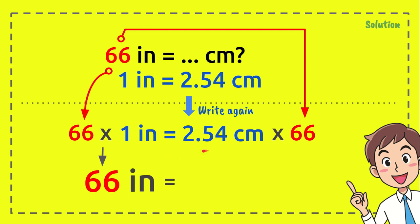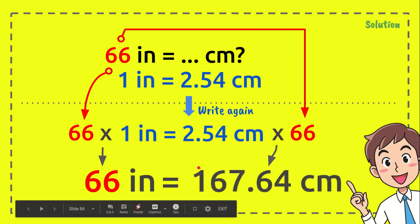And 2.54 centimeters times 66 equals what? It equals 167.64 centimeters. And this is the answer to the question.